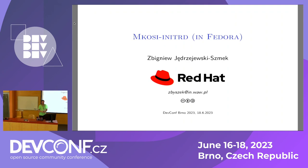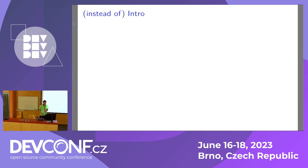This talk is about MKSI InitRD, which is an alternative way to build initrds. The official title mentioned Fedora, but the Fedora part kind of shrunk over time, so it's mostly about MKSI InitRD with a bit of mention of Fedora at the end.